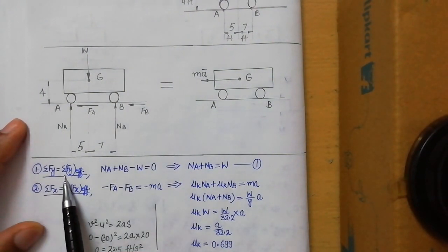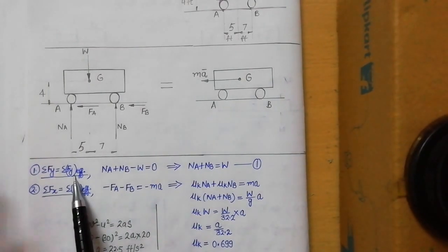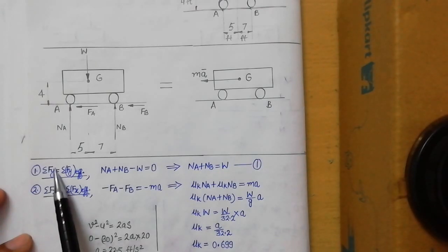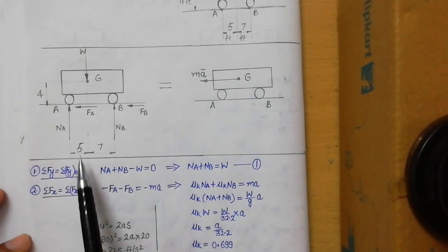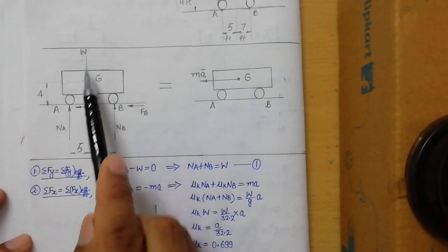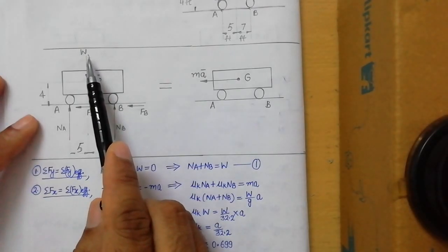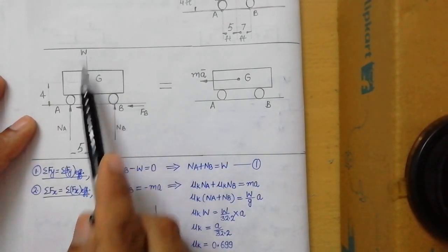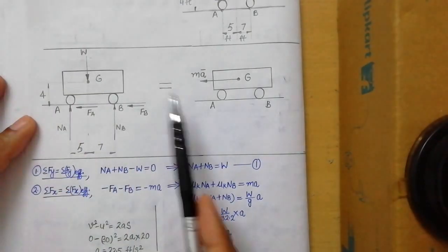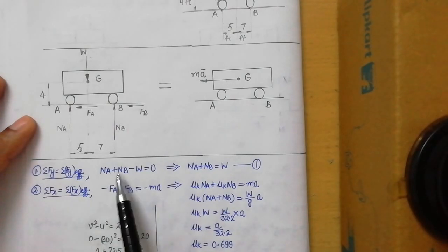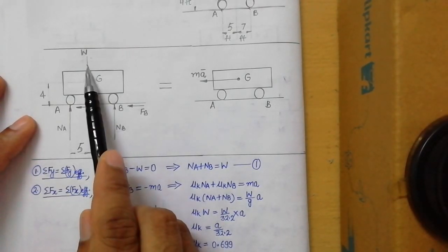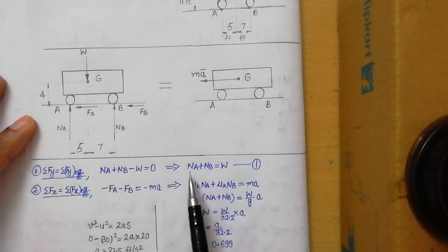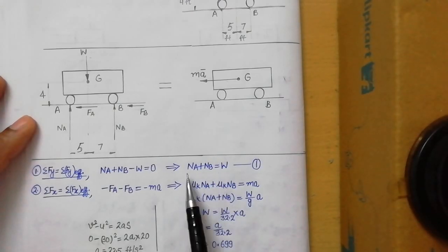Applying ΣFy = ΣFy(effective): the forces acting in the y-direction are NA, NB, and W. Since the truck is not moving vertically — only horizontally — the net vertical effect is zero. So NA + NB − W = 0, giving us Equation 1: NA + NB = W. All three variables are unknown at this stage, so we leave this as Equation 1.